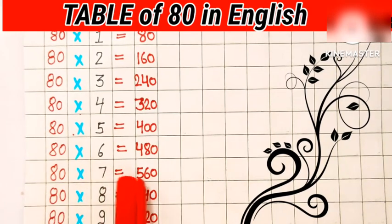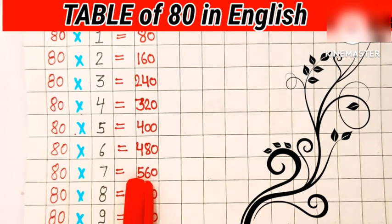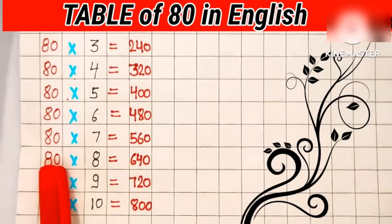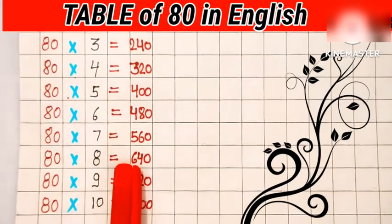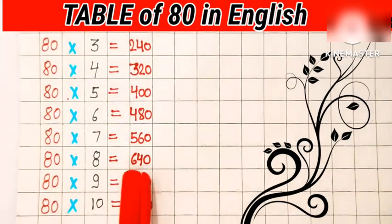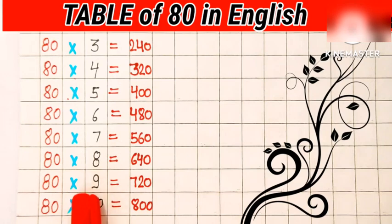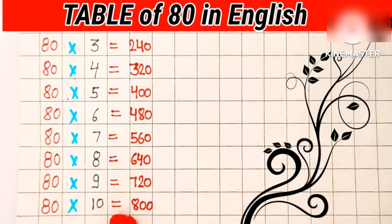87's are 560. 88's are 640. 89's are 720. 80's are 800. Okay students, take care and bye-bye.